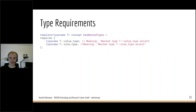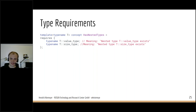Type requirements check whether certain types exist. The requirement starts with the typename keyword followed by a type name. For example, a concept 'has_nested_types' can check whether T has two nested types called value_type and size_type. If T has both nested types, has_nested_types<T> is true; if it has none or only one, it is false.